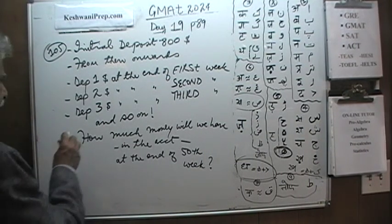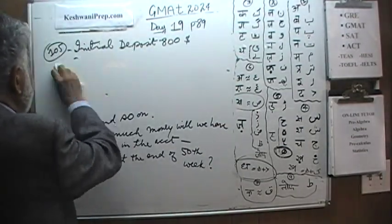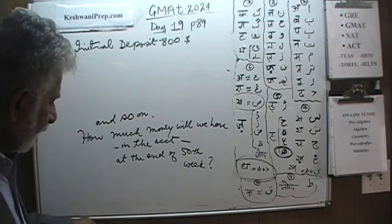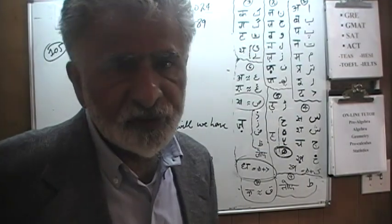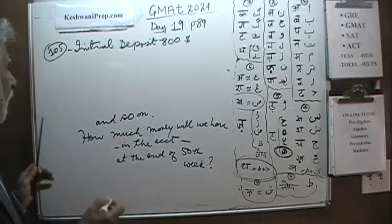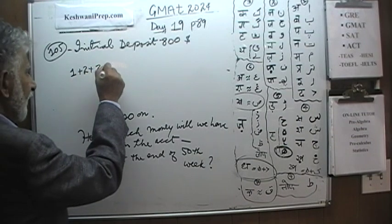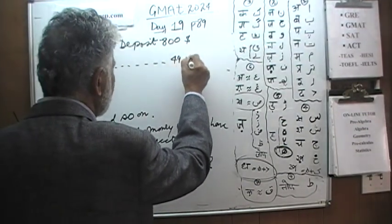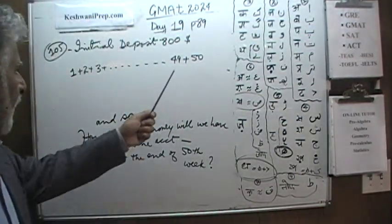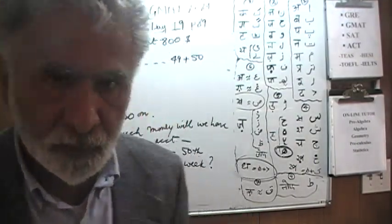Let's see what we can do. This question is essentially a very roundabout way of asking: can you figure out the sum of 1 through 50 — 1 plus 2 plus 3 plus 4, all the way to 50? At the end of the first week we deposit $1, then $2, then $3, and so on. At the end of the 49th week we deposit $49, and at the end of the 50th week we deposit $50. If we can figure out the sum of this series, we simply add $800 — our initial deposit — and we have the answer. Let's do it together.